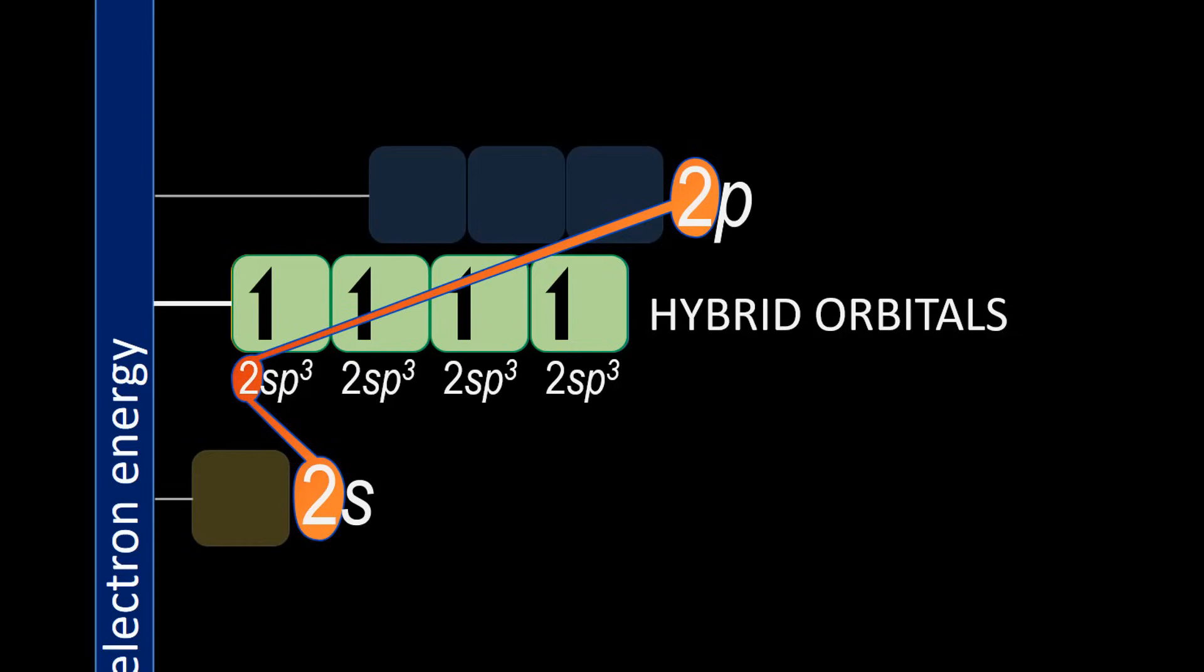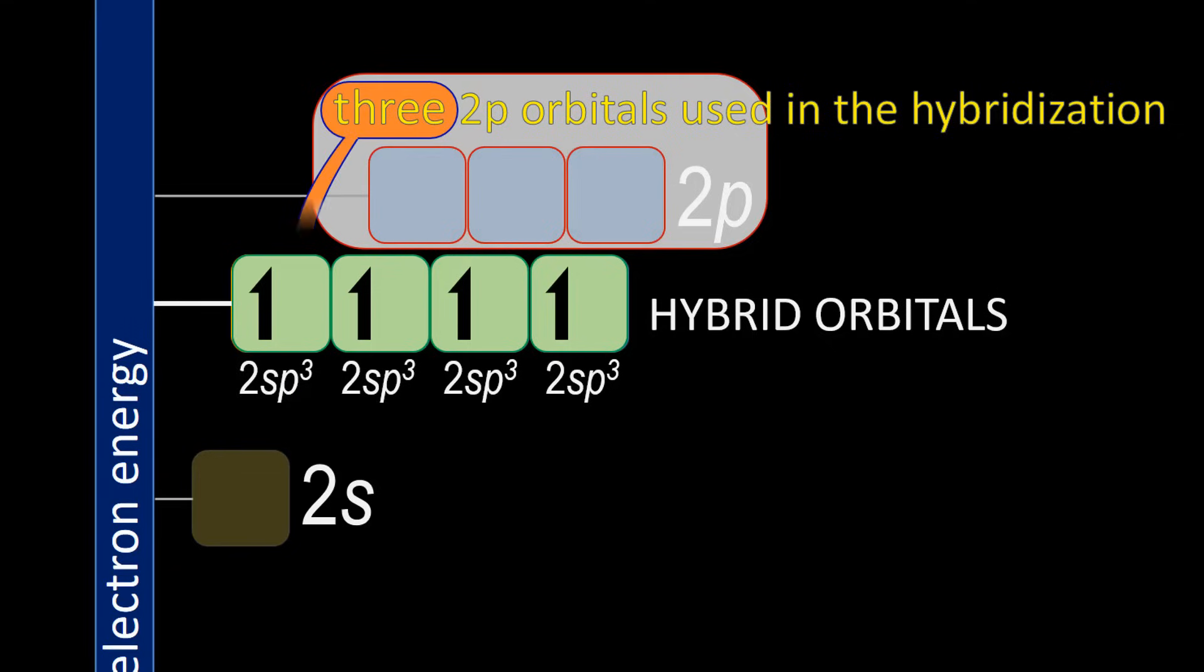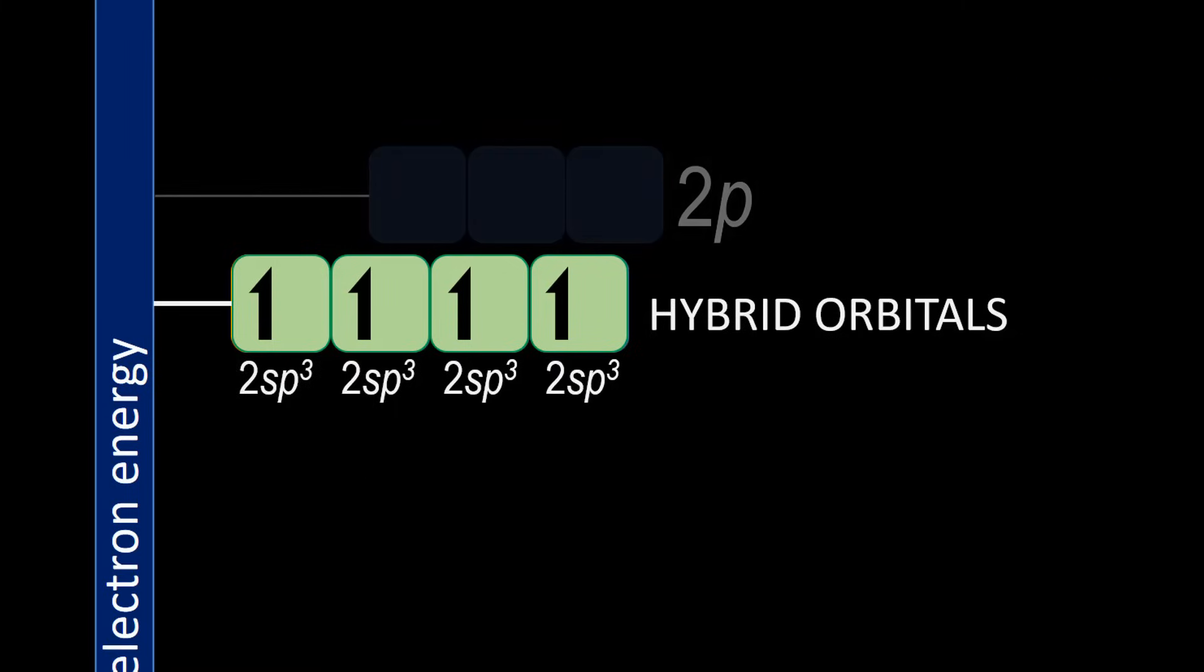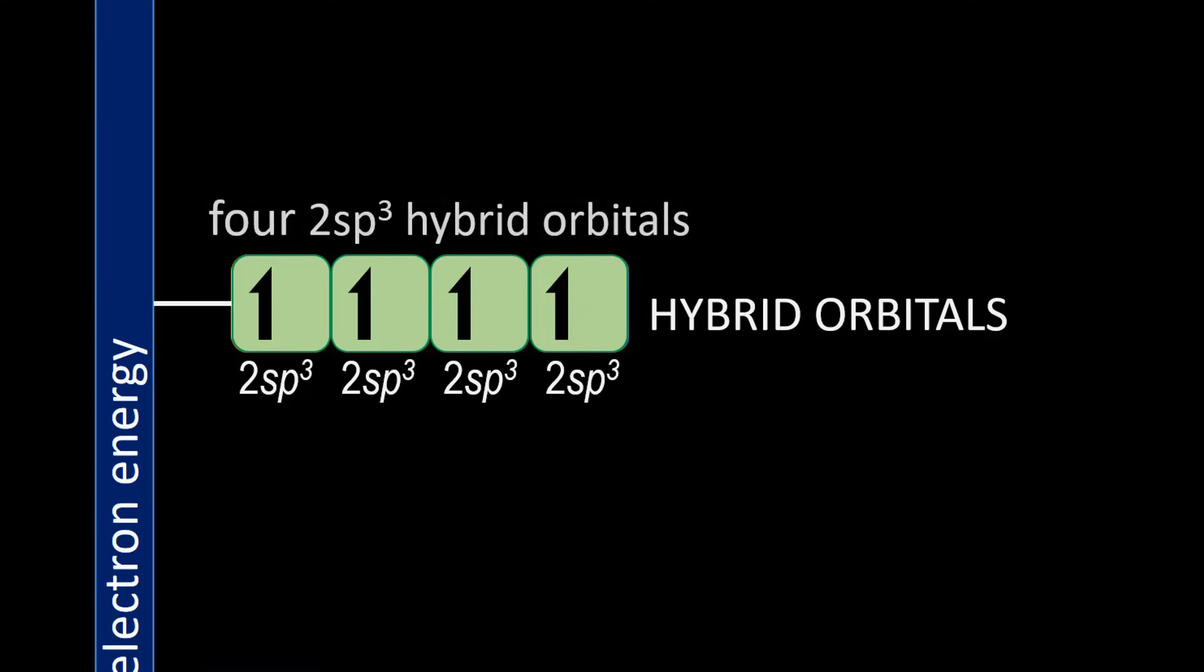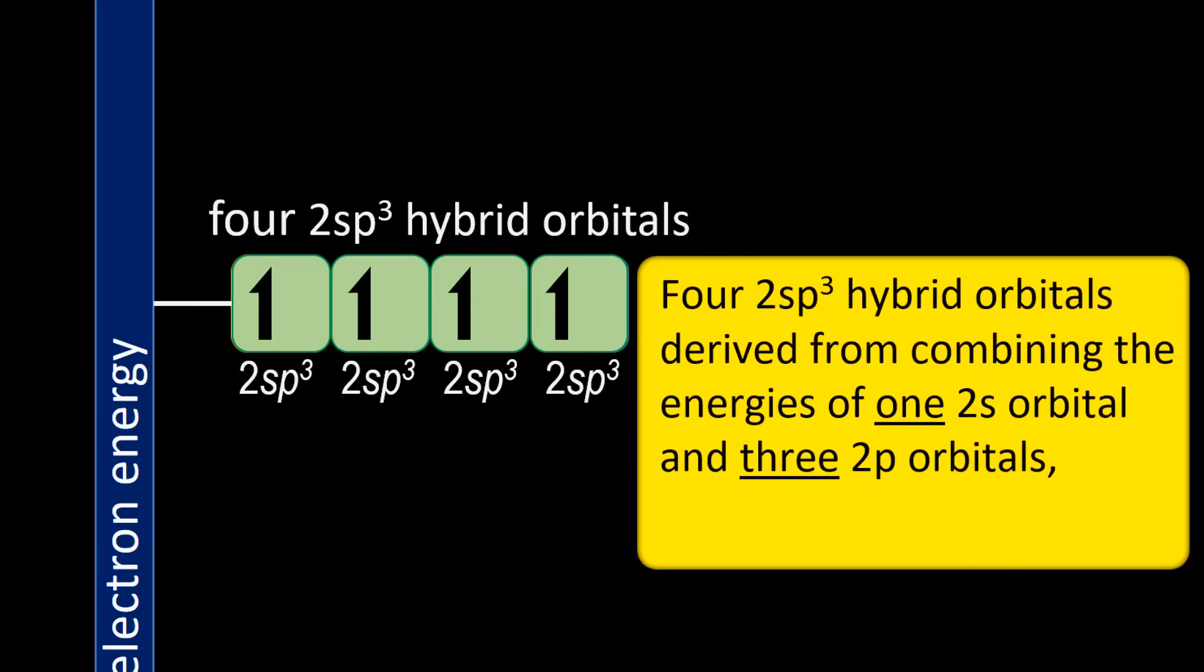The 2 comes from the second principal energy level that the valence orbitals are in. The s comes from the 2s orbital contributing to the hybridization, and the p comes from the 2p orbitals contributing to the hybridization, and the 3 comes from the number of 2p orbitals used in the hybridization. Once hybridized, the 2s and 2p orbitals no longer exist, and so we have four 2sp3 hybrid orbitals. Four 2sp3 hybrid orbitals derived from combining the energies of one 2s orbital and three 2p orbitals, which gives a total of four 2sp3 orbitals.